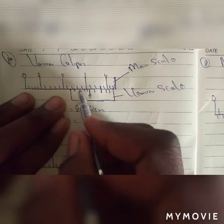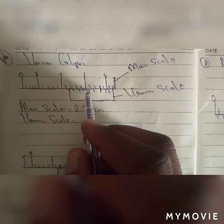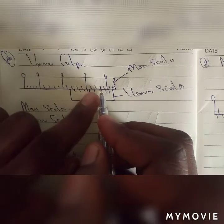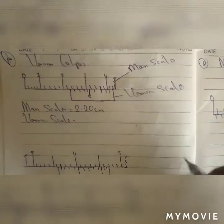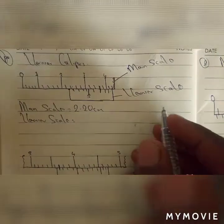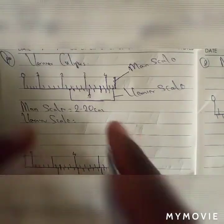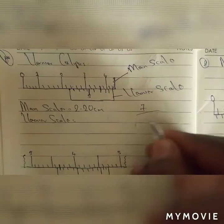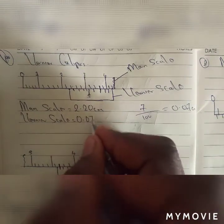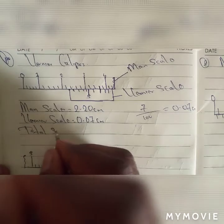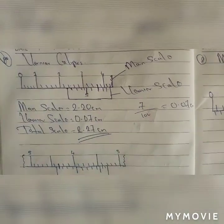Now let's check: this line is not meeting — it's in between; not meeting, in between, not meeting, not meeting. This one — yes! Now let's count: one, two, three, four, five, six, seven — which means at number seven, the line meets. Now I divide seven by 100 to bring it down to centimeters. Seven divided by 100 gives 0.07 centimeters. So our total reading will now be 2.27 centimeters.